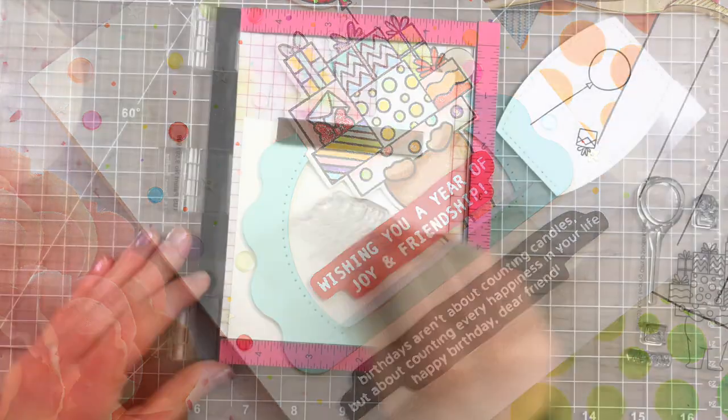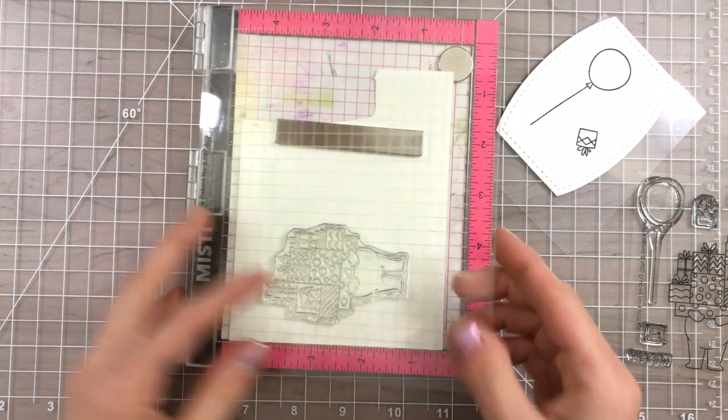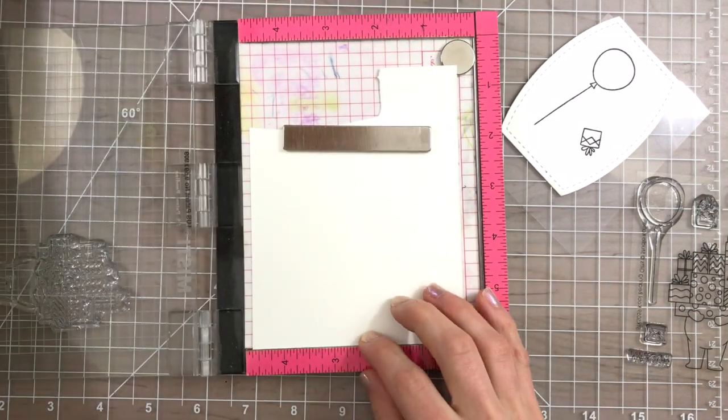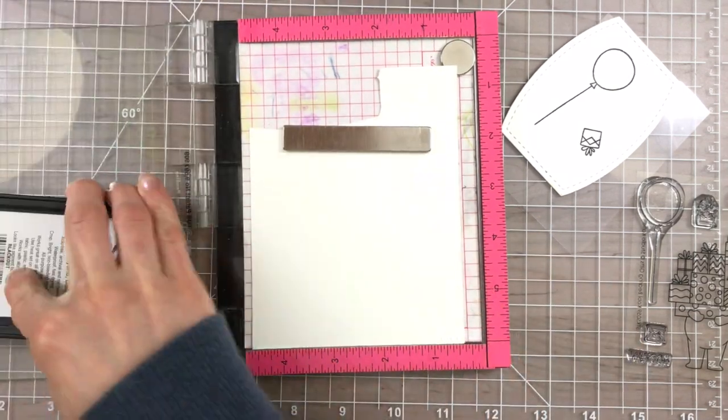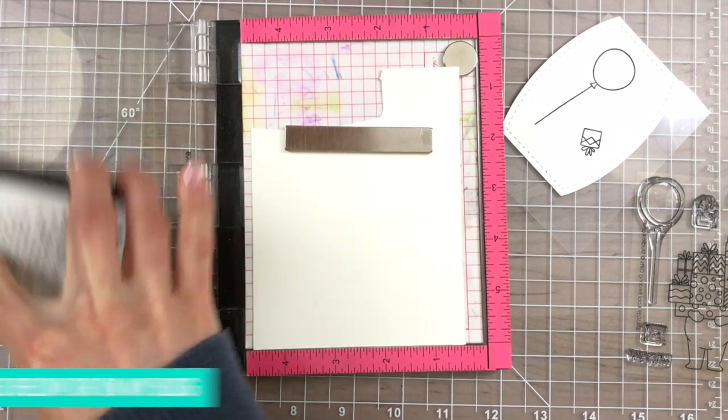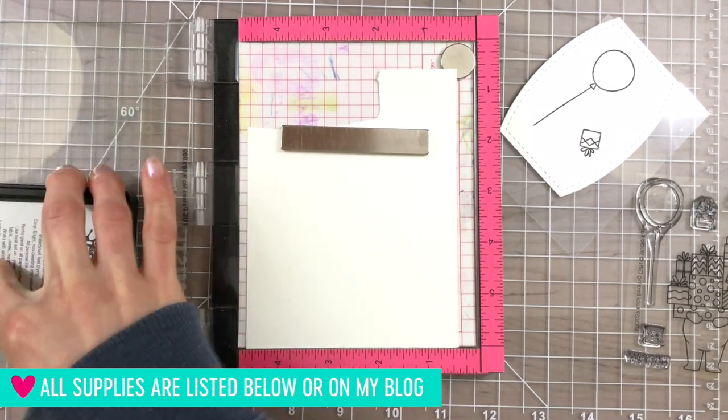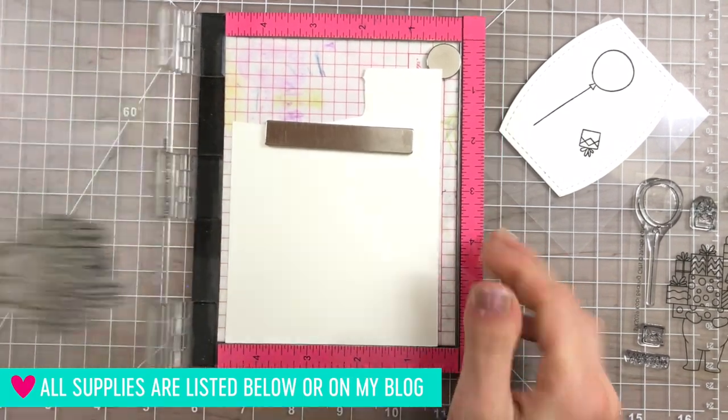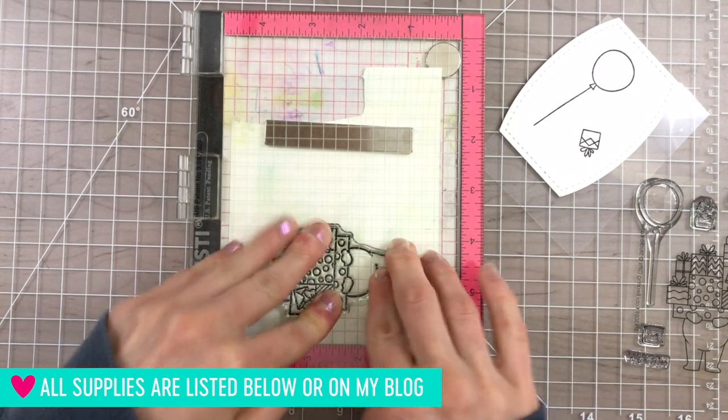For my card today for the blog hop, I'm going to be using the Kobe Bearing Gifts stamp set and the coordinating dies. I'm going to begin by stamping this bear with the gifts onto some Simon Says Stamp Ultra Heavy White cardstock and I'm going to color this with Copic markers.